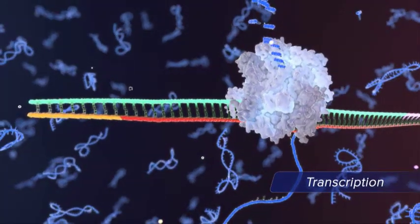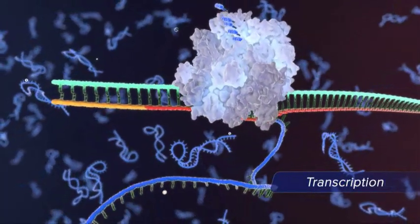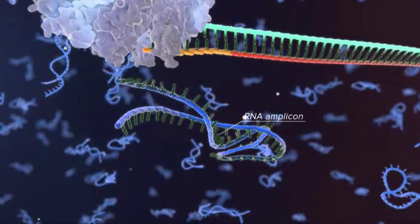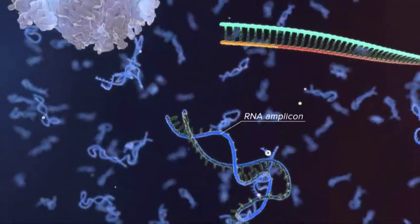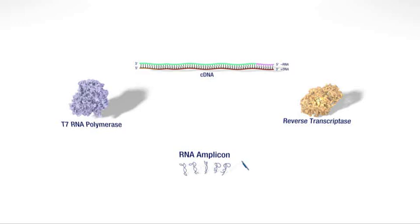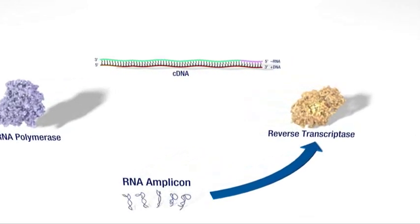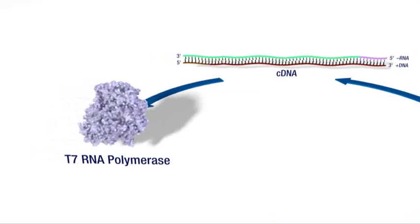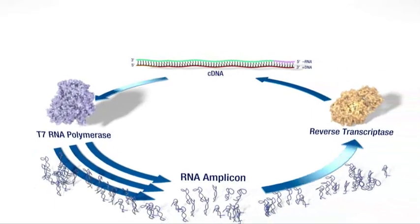T7 RNA polymerase initiates transcription of the double-stranded DNA template, producing multiple copies of the RNA amplicon. Each newly synthesized RNA amplicon further feeds the cycle. Reverse transcriptase acts on the amplicons, yielding cDNA templates, which in turn lead to exponential production of RNA amplicons.